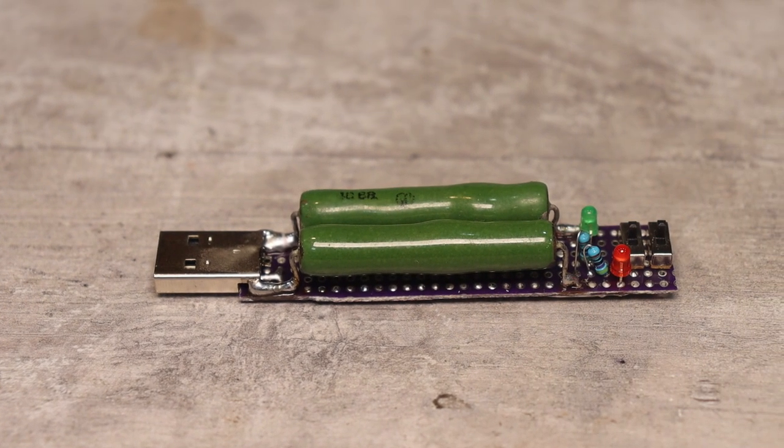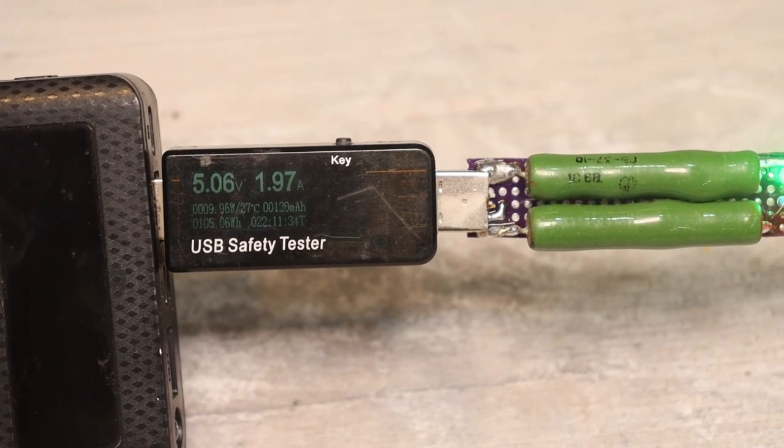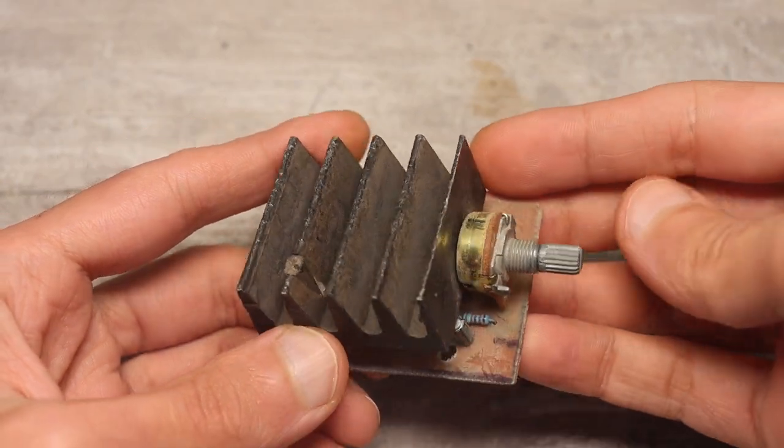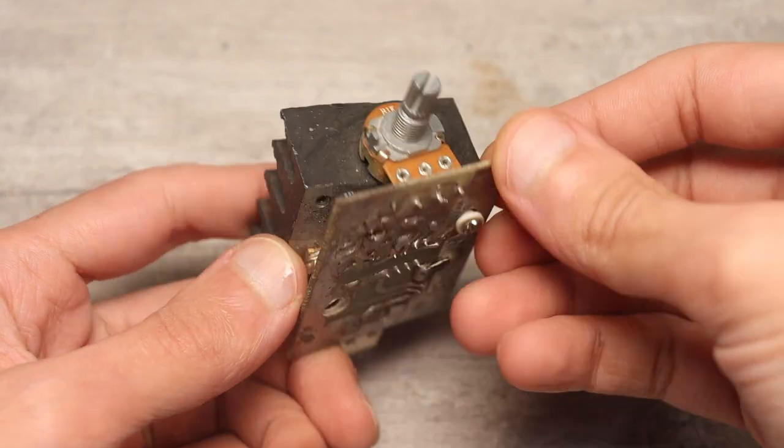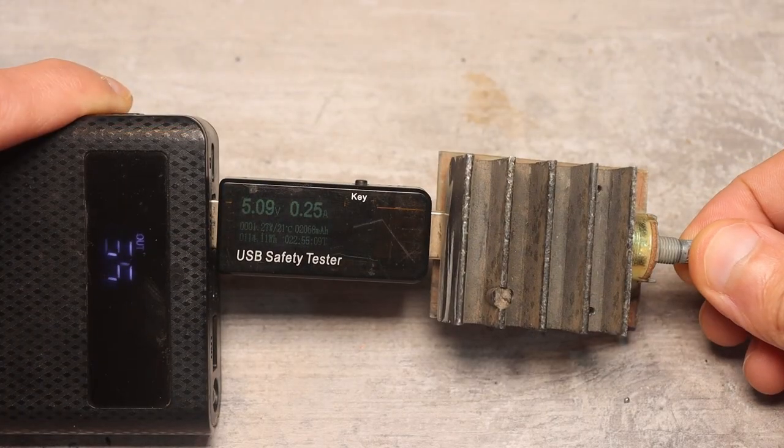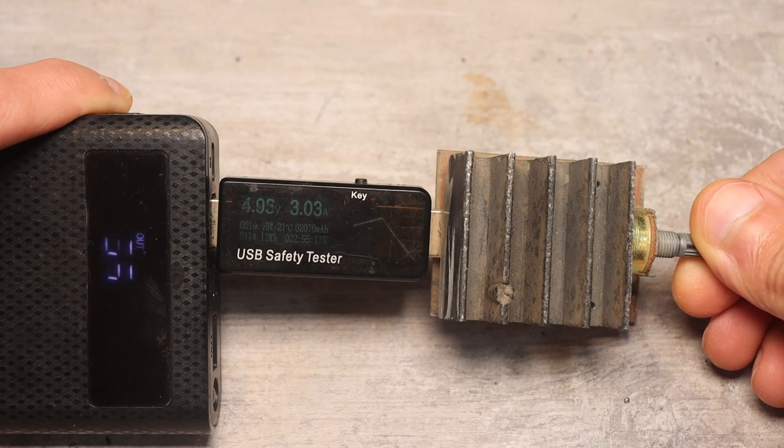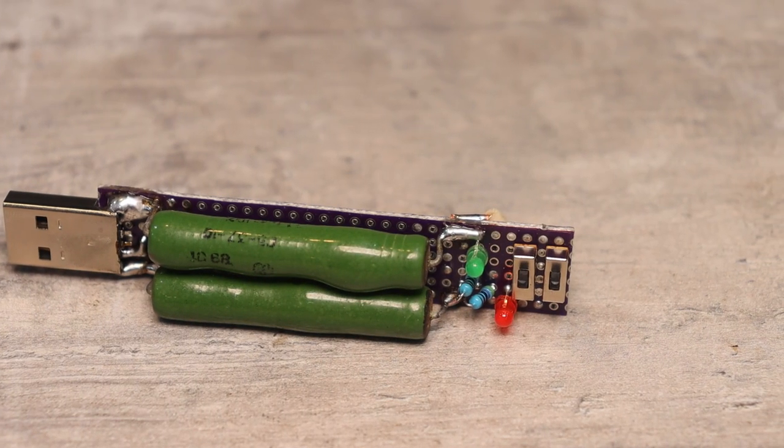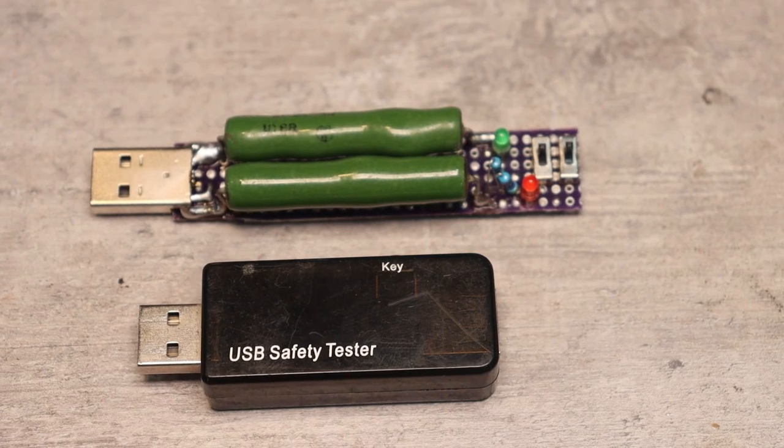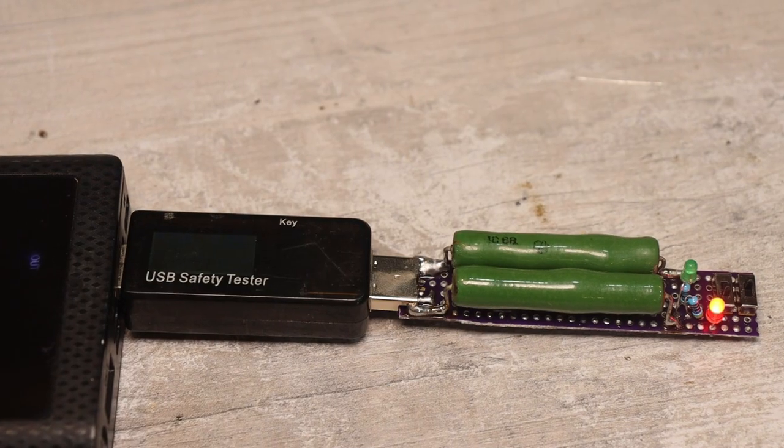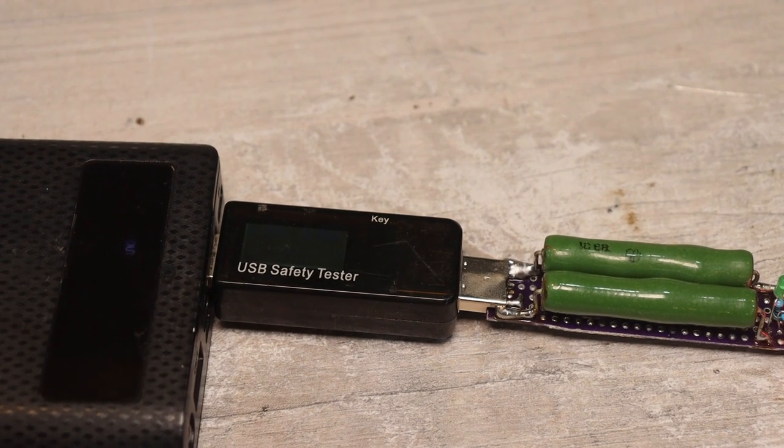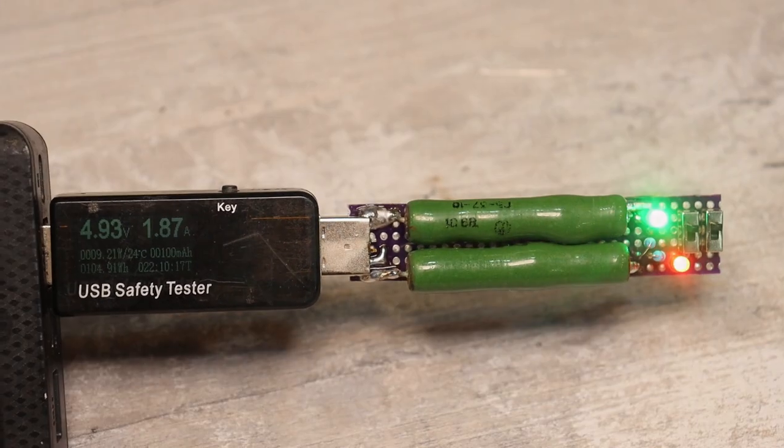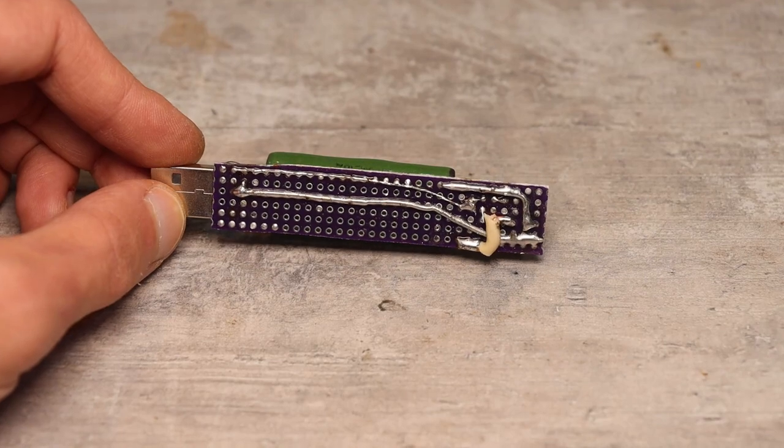The next device will allow you to check 5V USB sources under load. Previously, I have already shown USB current-stabilized electronic loads, which made it possible to maintain a given current value and smoothly change this value. This load is much simpler and, by the way, the Chinese sell similar things. Such a load will allow you to load any 5V USB output with a current of either one or two amps.